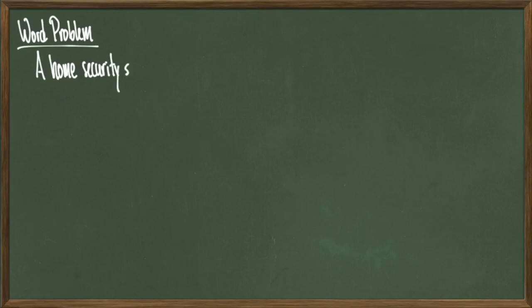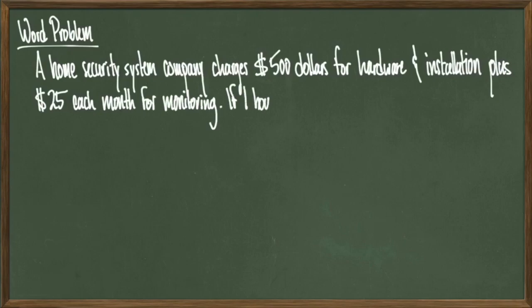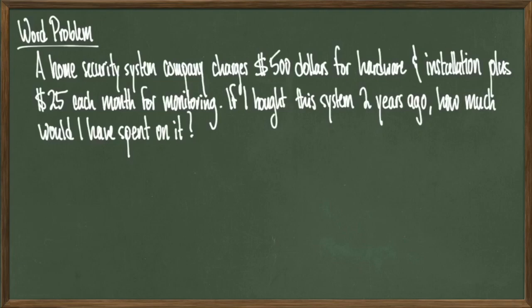For our last example, we're going to do a word problem. Suppose that a home security system company charges $500 for hardware and initial installation, then plus a $25 charge every month for the professional monitoring. If I bought this system two years ago, and have been using it ever since, how much would I have spent on it at this point? The idea with this problem is that we have to build a linear function from scratch, and then we have to evaluate that function at a particular number.